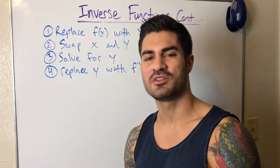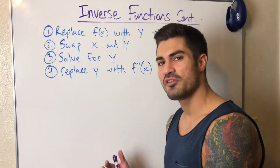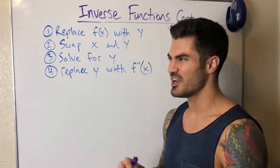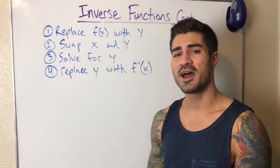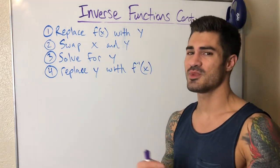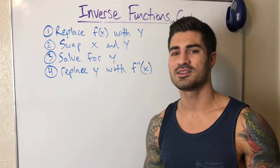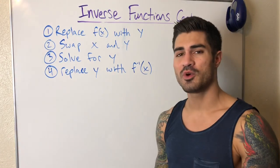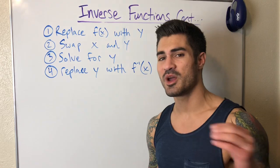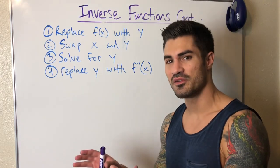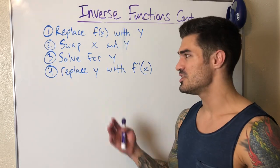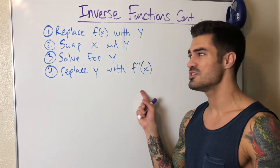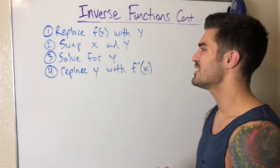Now let's do some examples where we find the inverse. Here are the steps: first, replace f(x) with y — it's just easier to look at. Then swap the x's and y's — anywhere you see x replace it with y, anywhere you see y replace it with x. Now solve for y, meaning get y by itself on one side. That "y equals" expression is the equation of our inverse. Finally, replace y with inverse notation.